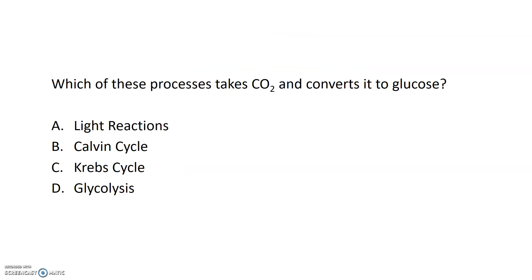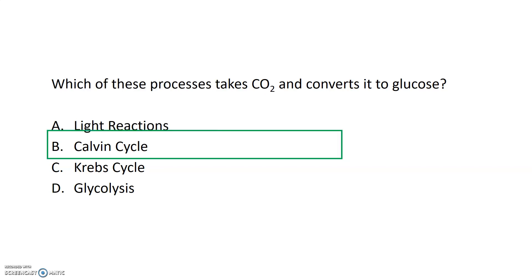Which of these processes takes carbon dioxide and converts it into glucose? It is the Calvin cycle. Since we're talking about taking carbon dioxide and making glucose, it's part of photosynthesis, not respiration — so you can eliminate the Krebs cycle and glycolysis immediately. The light reactions take in water, split it, and generate ATP. The Calvin cycle is the process where carbon dioxide comes in and glucose ultimately comes out.